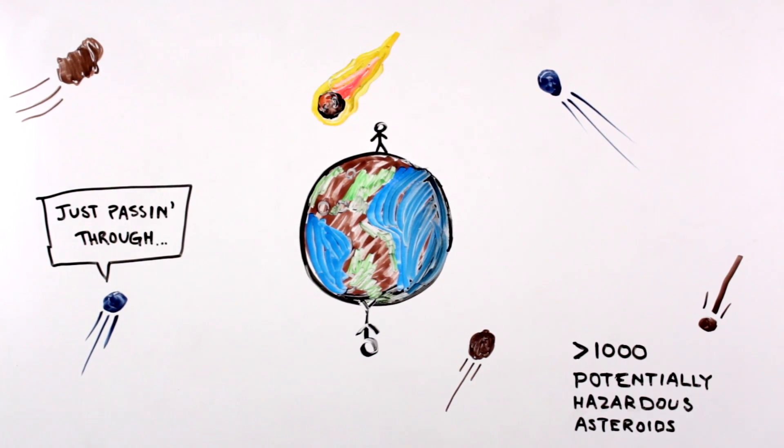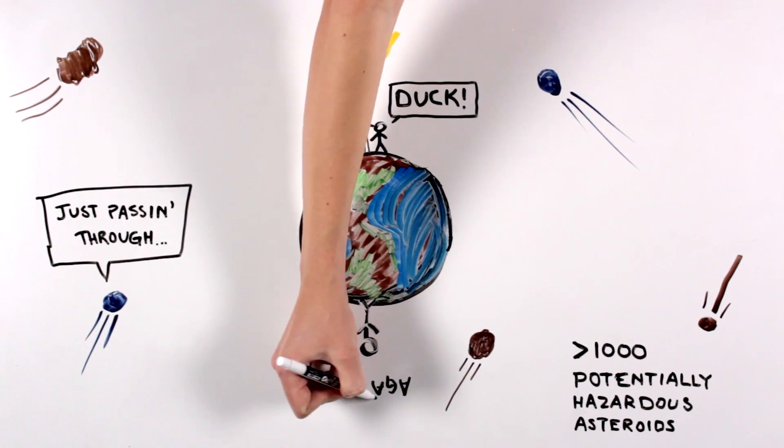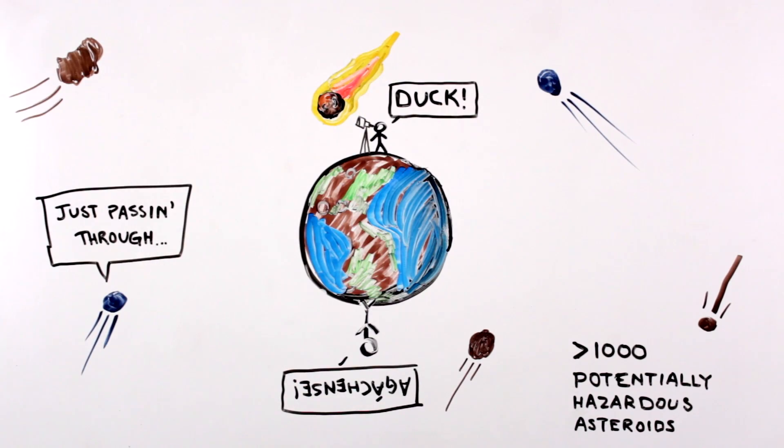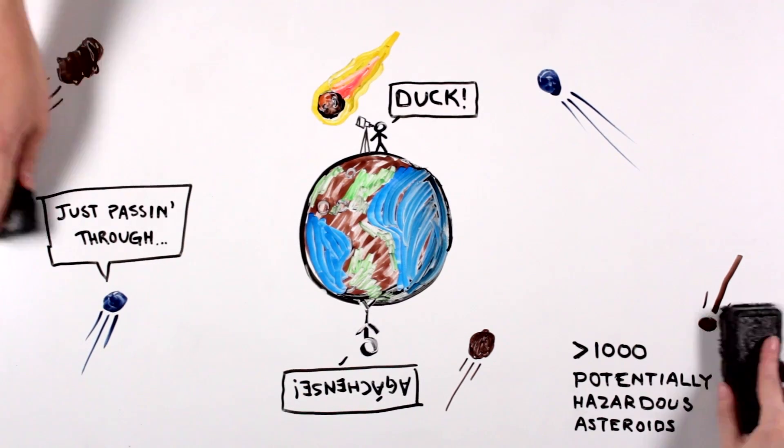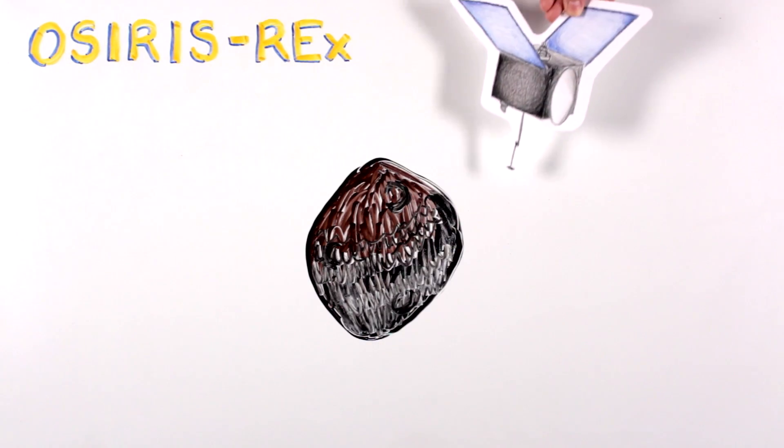Scientists are studying these objects to learn about the threat of asteroid impact and what might be done to avoid the fate of the dinosaurs, or even smaller but still messy collisions. The OSIRIS-REx mission is sending a spacecraft to visit one of these potentially hazardous asteroids named Bennu.